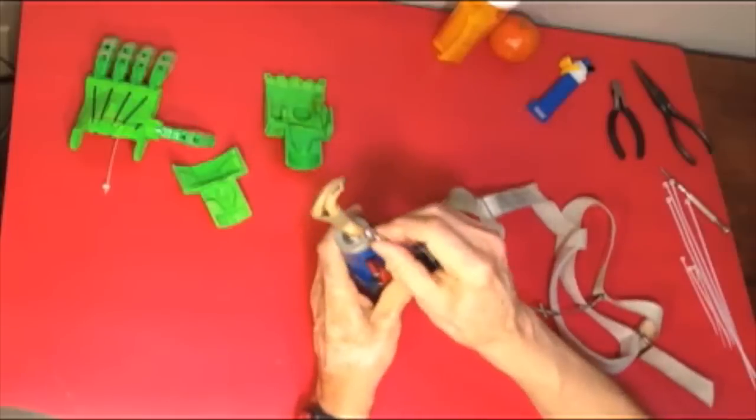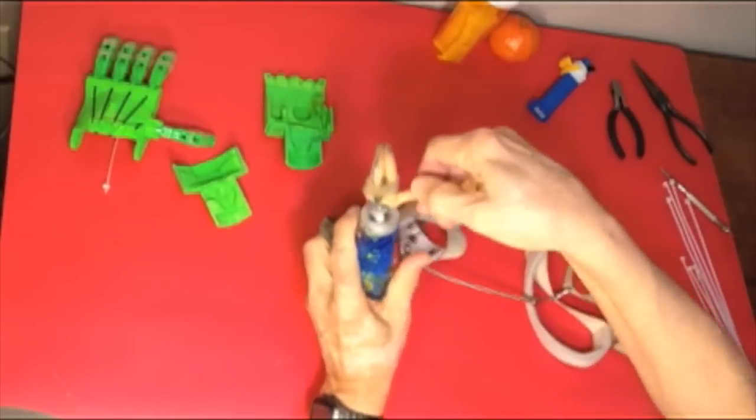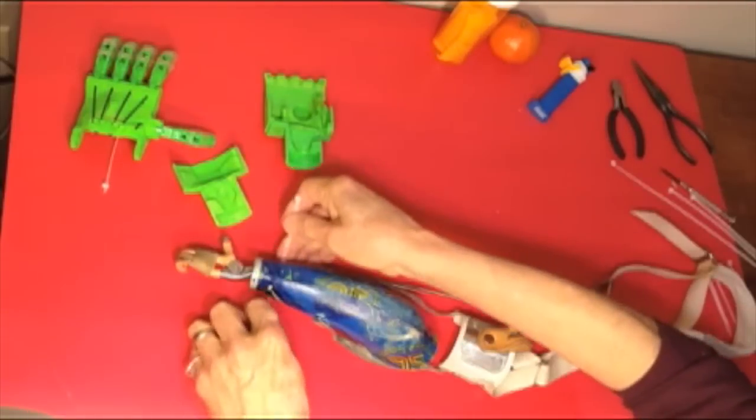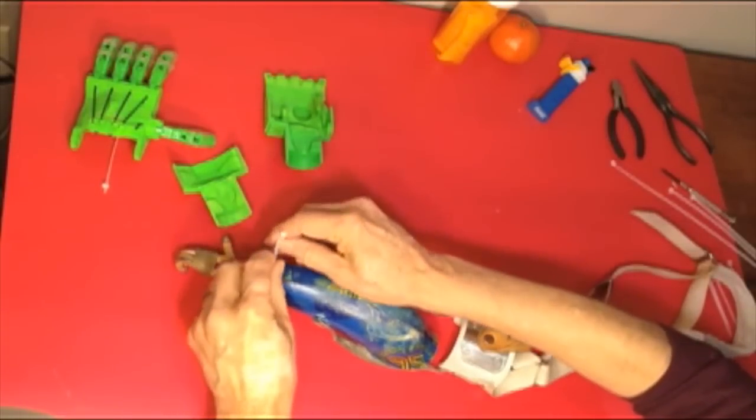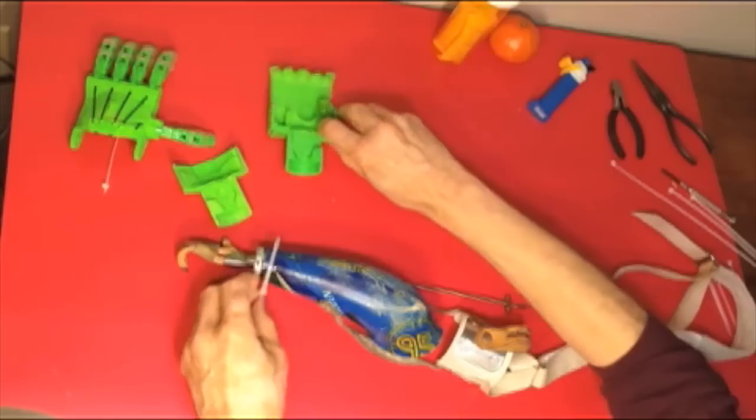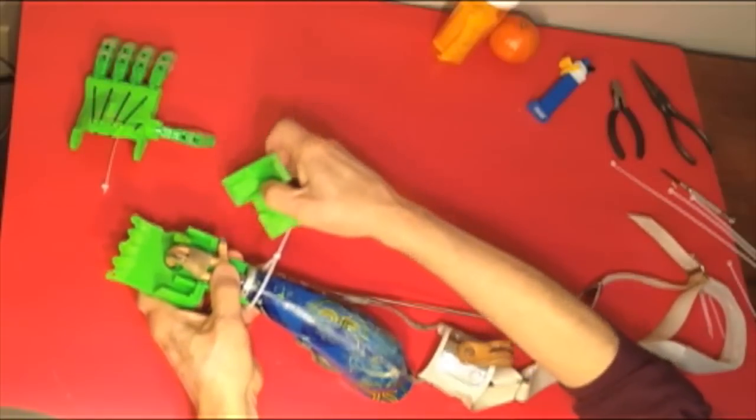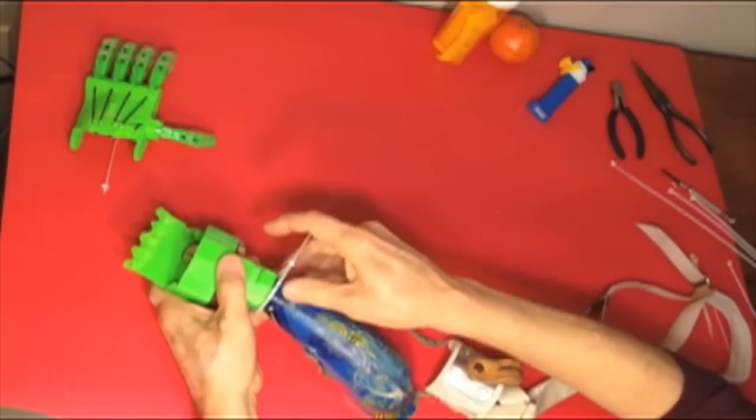The hand on Wilhay's prosthesis is an Enable Raptor hand that is normally fitted on a gauntlet strapped to the forearm of a person who has a functional wrist and a hand with missing fingers. Bending the wrist pulls the strings that flex the fingers for gripping things.